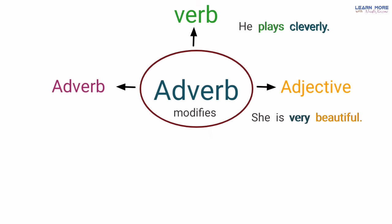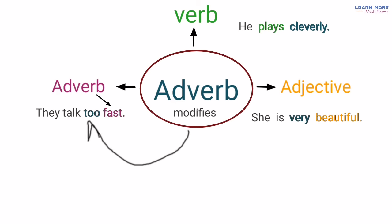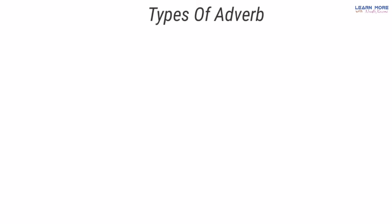Aur teesra: 'They talk too fast' — woh bahut tez bolte hain. Ab yahan par jo 'fast' hai yeh ek adverb hai kyunke yeh unke kaam jo woh karte hain — bolne ka — uske baare mein bata raha hai: they talk, woh bolte hain, kis tarah? Fast. Aur 'too' yahan par ek aur adverb hai jo is adverb 'fast' ke baare mein zyada information de raha hai — they talk fast, woh tez bolte hain, lekin kitna tez? Too fast, yani bahut tez. Types of adverb mainly five hain.